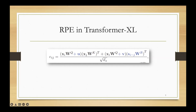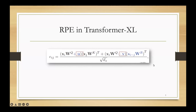In Transformer-XL, the authors introduced additional bias terms for queries and used a sinusoidal formulation for positional encoding. The sinusoidal encoding vectors provide a prior of relative position. u and v are two learnable vectors, and W_r is the trainable matrix projecting s_{i minus j} into a location-based key vector.